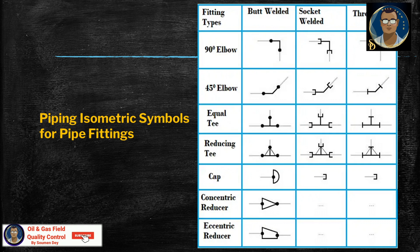I will read a few for you. Fitting types: 90-degree elbow — butt welded in the first column, socket welded in the second column, and threaded in the last column. 45-degree elbow, equal tee, reducing tee, cap, concentric reducer, and eccentric reducer are also shown in the butt welded column.